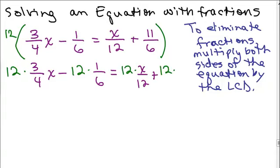and the 12 times 11 over 6. So I've multiplied both sides of the equation by 12 by multiplying every term on both sides by 12.